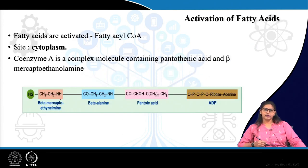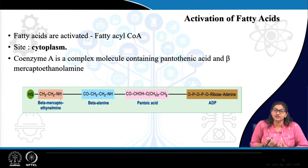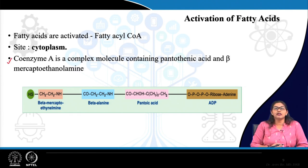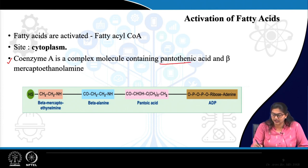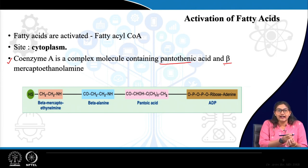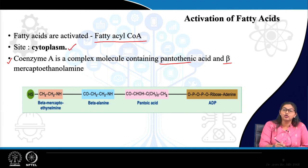For fatty acid oxidation, one very important step is activation of fatty acid — similar to how glucose is activated by addition of UDP. Activation of fatty acid occurs via addition of a coenzyme A molecule. Coenzyme A is a complex of pantothenic acid and beta-mercaptoethanolamine. When coenzyme A is added to a fatty acid, it forms fatty acyl coenzyme A, which is the activated form of fatty acid, and this occurs in the cytoplasm.